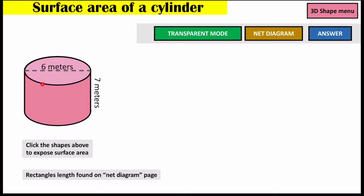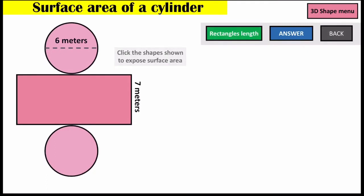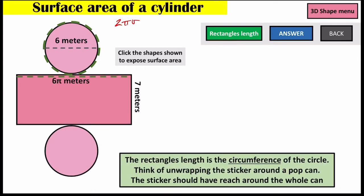Imagine a pop can with a wrapper around it — if you take that wrapper off, it becomes a nice rectangle. The length of the top of that wrapper is unknown to us at first, but if we wrapped it around the circle, that length would be the literal distance of the circle's circumference. So the circumference 2πr is going to give us the top value of the rectangle. The circumference length is 6π, because 2 times π times the radius of 3 gives us 2 times 3 which is 6, then π.